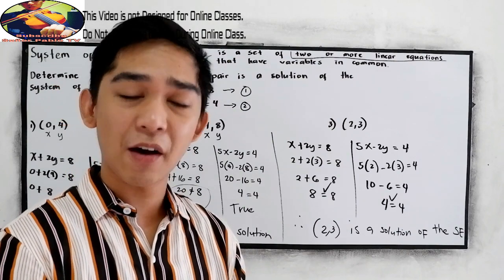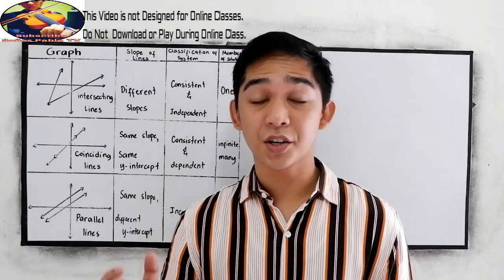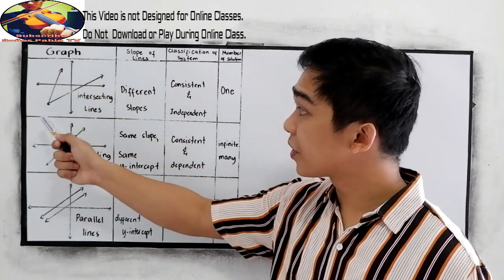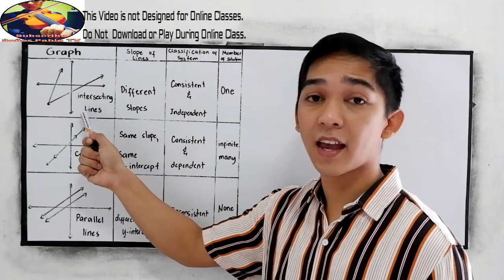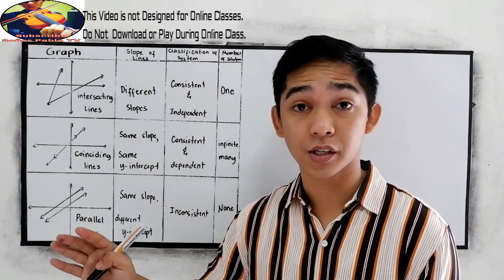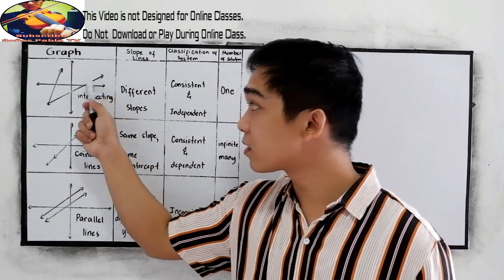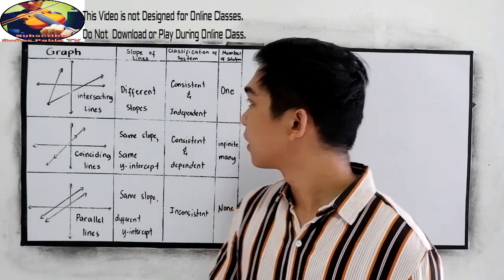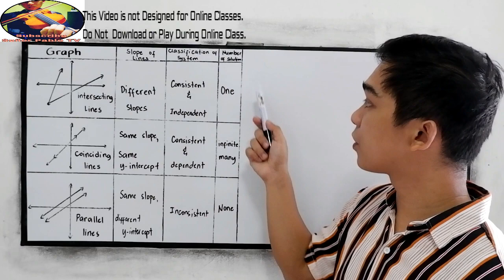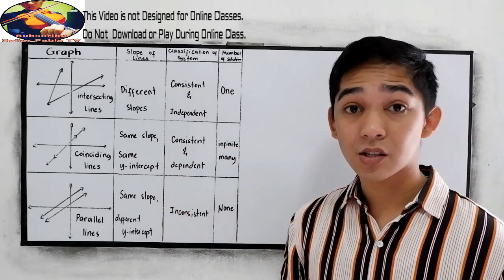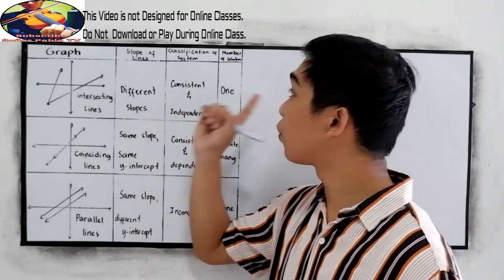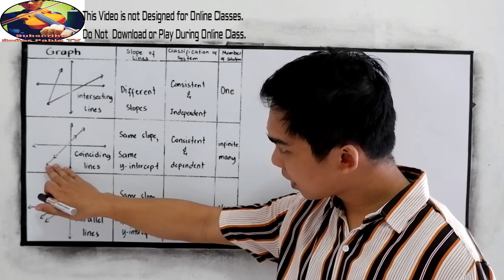Now we're going to look at the graph of a system of linear equations. If you encounter a graph with intersecting lines, that means the lines intersect at exactly one point. The slopes of the lines are different. The classification of this system is consistent and independent, and the number of solutions is exactly one — also called the unique solution — because there is exactly one point where the two lines intersect.